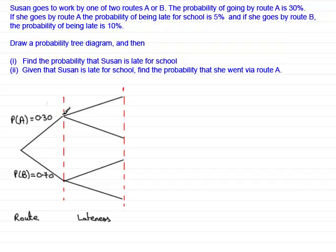Now, if she takes route A, the probability that she's late for school is 5%. And if she takes route B, the probability that she's late for school is 10%. Now, what you don't want to do is write the probability that she's late here is 5% or 0.05, and the probability of being late here as 0.10, 10%. What happens is that you contradict what you've written here.